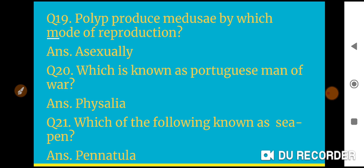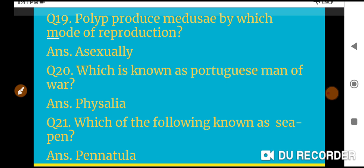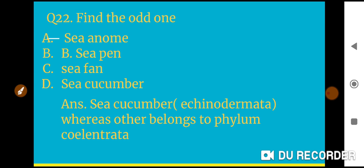Question 19: Polyp produces medusa by which mode of reproduction? Budding. Question 20: Which is actually known as the Portuguese man of war? Physalia is known as the Portuguese man of war. Question 21: Which of the following is known as sea pen? Pennatula is known as sea pen.